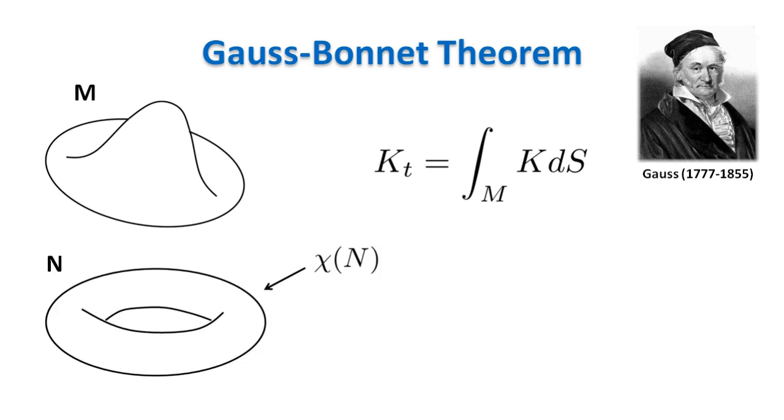The Gauss-Bonnet theorem states that given a compact two-dimensional manifold without boundaries and with Euler characteristic chi, its total curvature is equal to 2 pi chi.